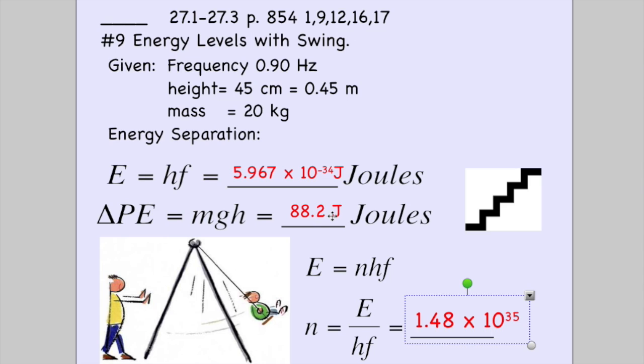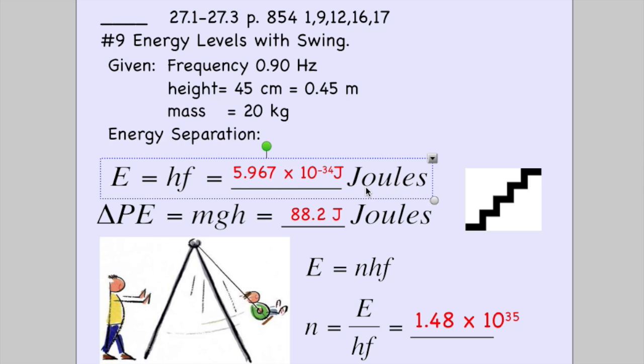88.2 joules. Take that, put it right on top there, divided by the height of one step, that 5.967 or basically 6.0. And that goes on the bottom. And you get a huge number, basically 1.5 times 10 to the 35th.